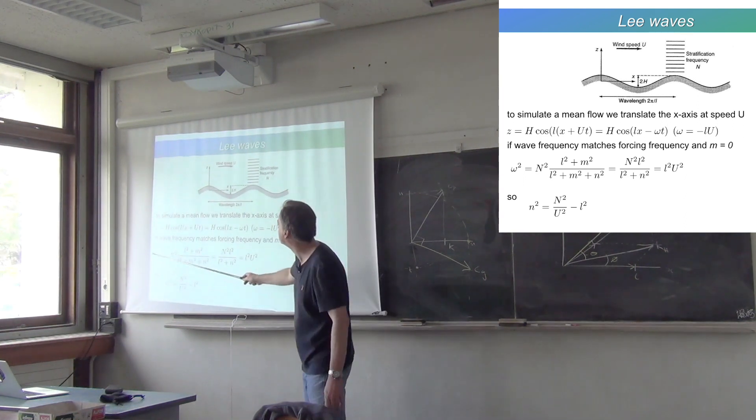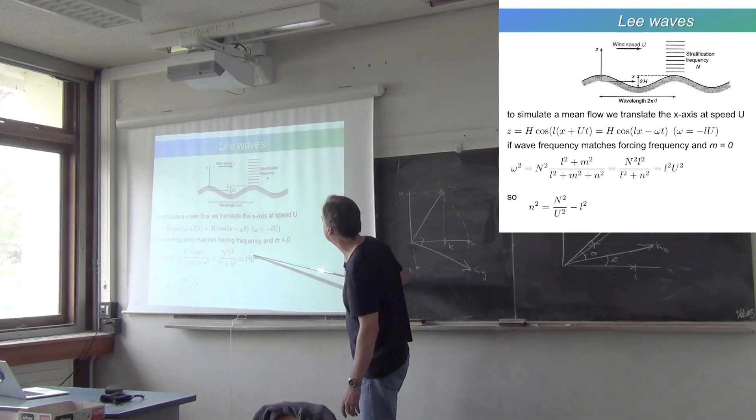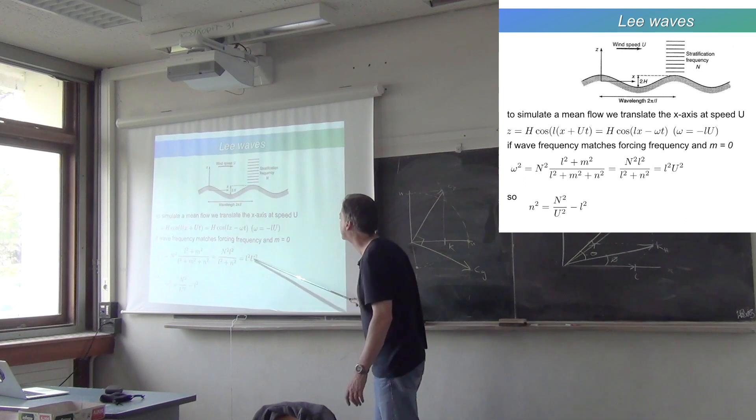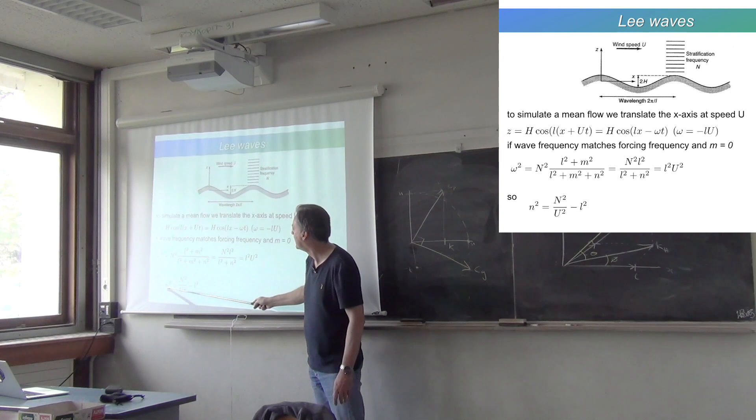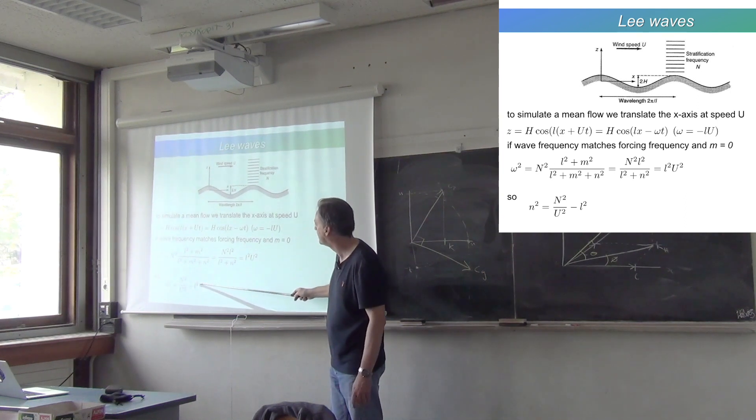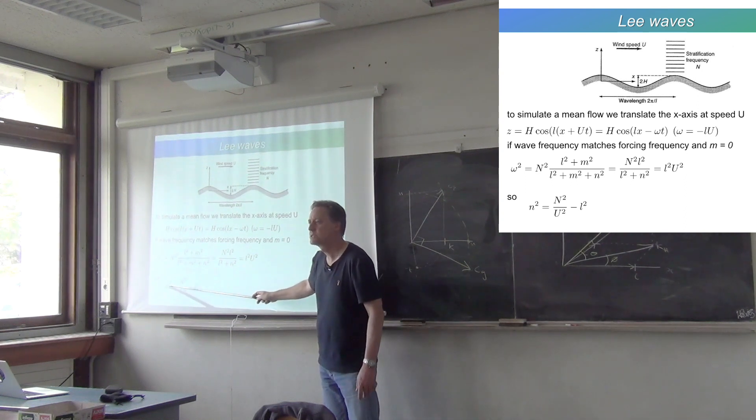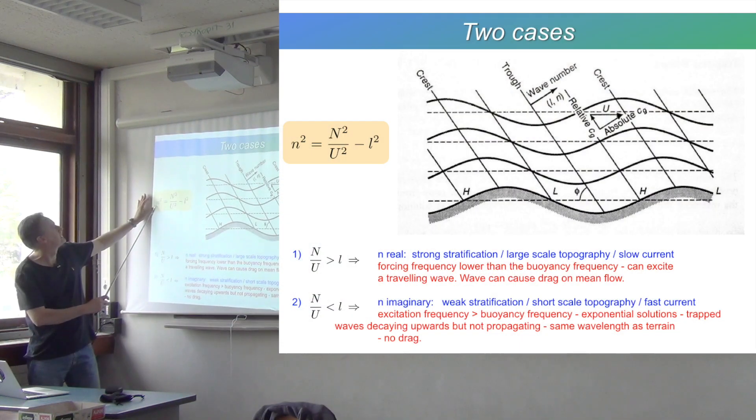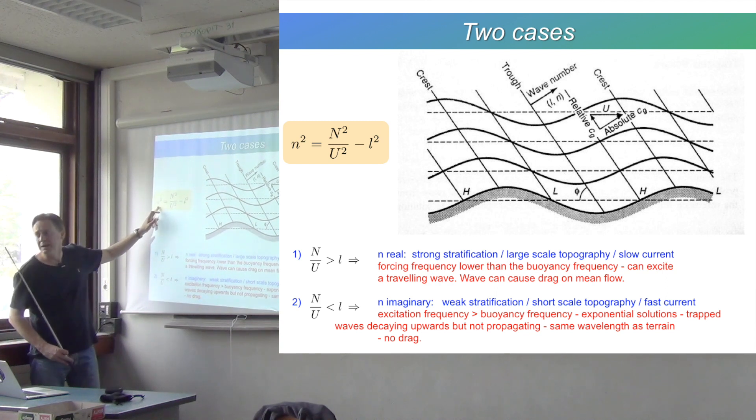Plug that into the left-hand side of the dispersion relation, so you have omega squared equal to L squared times U squared. That gives you, when you simplify, little n squared equals big N squared over U squared minus L squared. Why are we interested in little n squared, the square of the vertical wave number? Because there are two possibilities for this equation: either this is positive and little n is real, or this is negative and little n is imaginary.